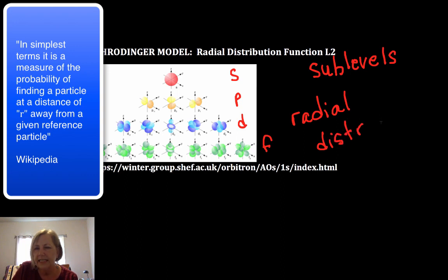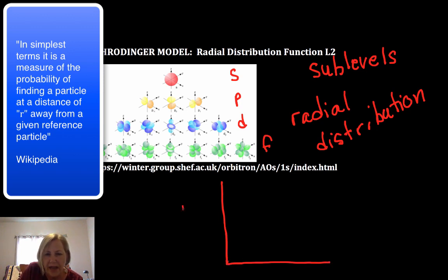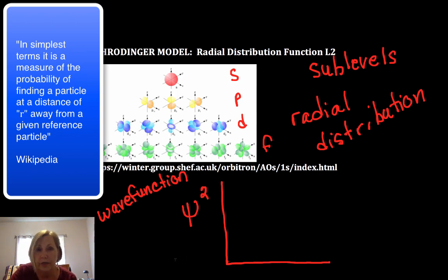What this does is it's a two-dimensional picture of the probability of finding an electron within a given region in space. And so ultimately, we would call that psi squared. That's the wave function squared. And ultimately, that's going to lead us into orbitals.